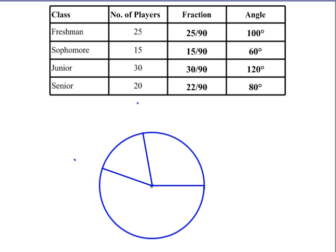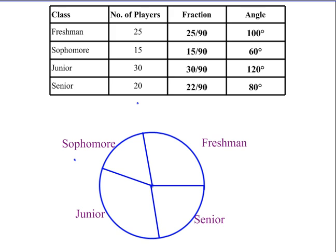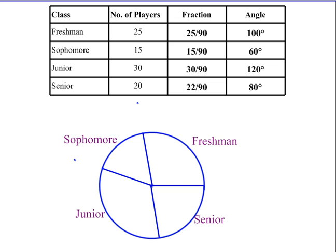Then you proceed with the other two angles. Then you simply need to label the regions. It might also be nice to put on the percents or the fractions, but that won't be necessary. We'll be doing more with fractions in lowest terms and percents later in the course.